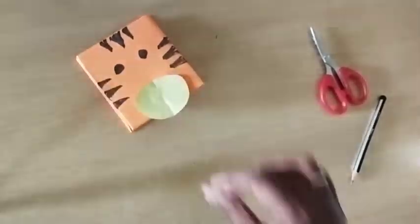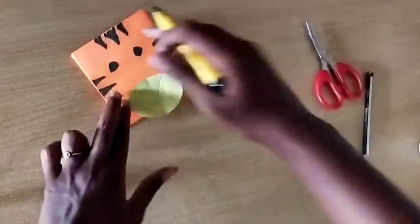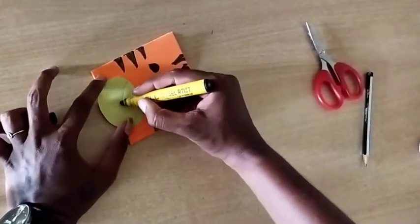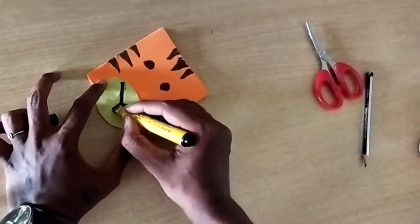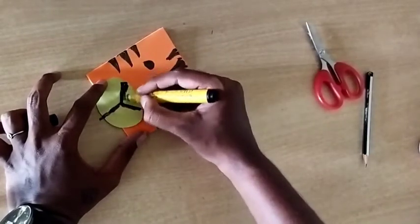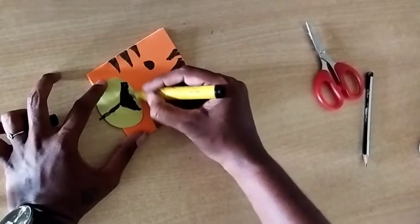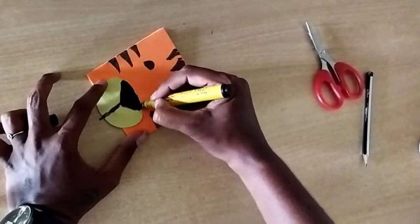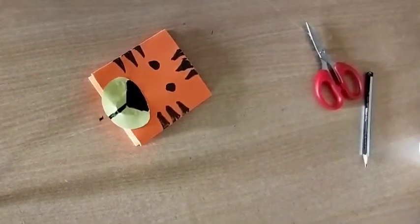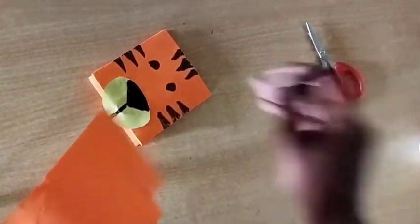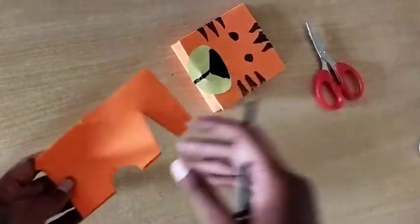We're adding the triangle for the nose. This is the tiger face with its stripes and features.